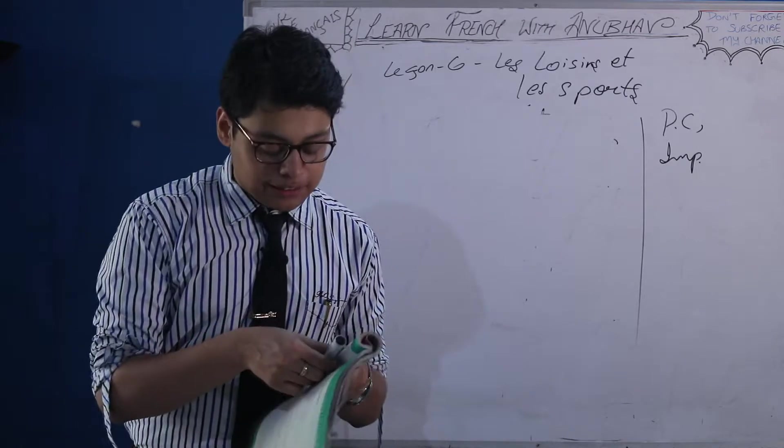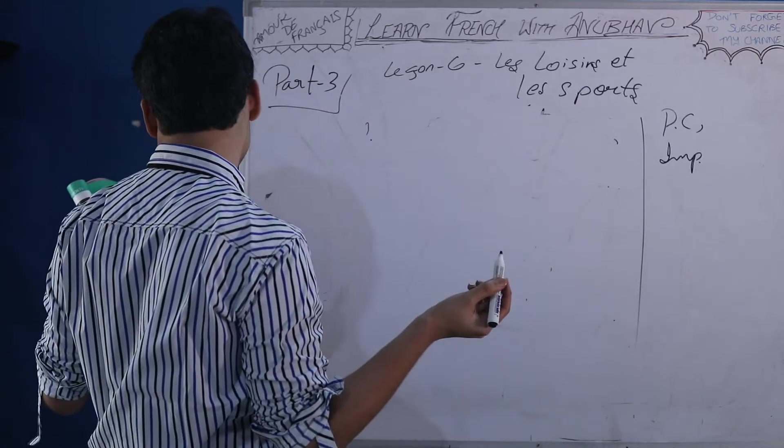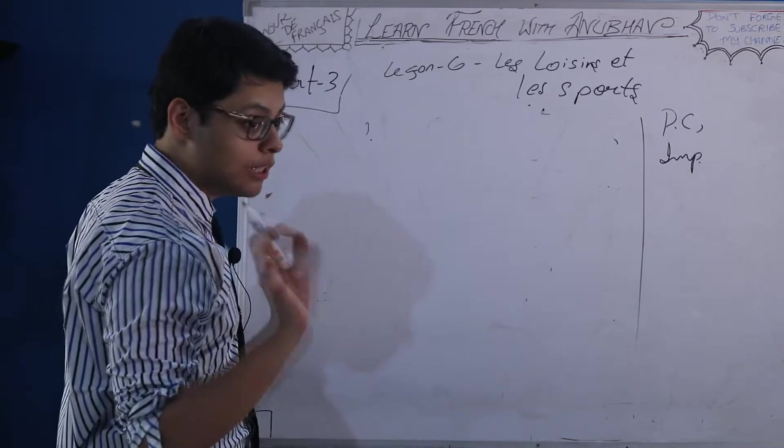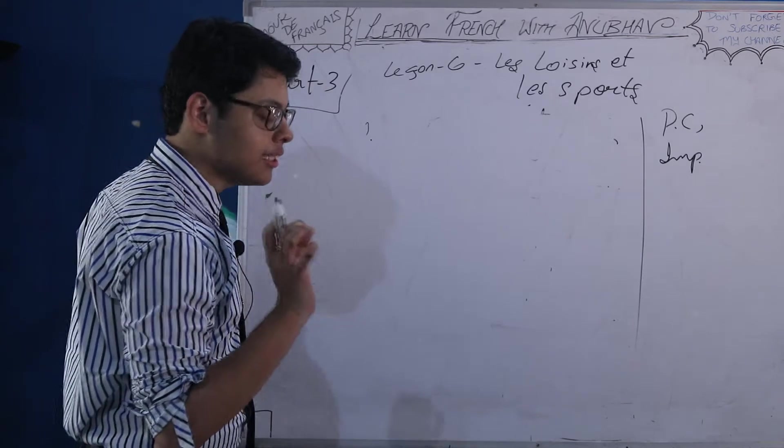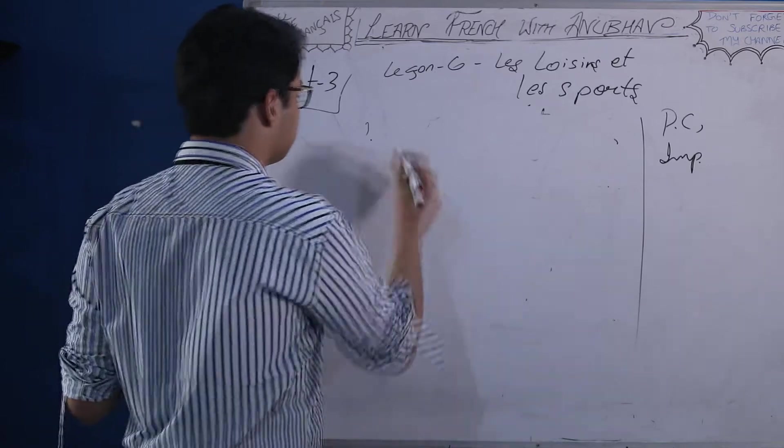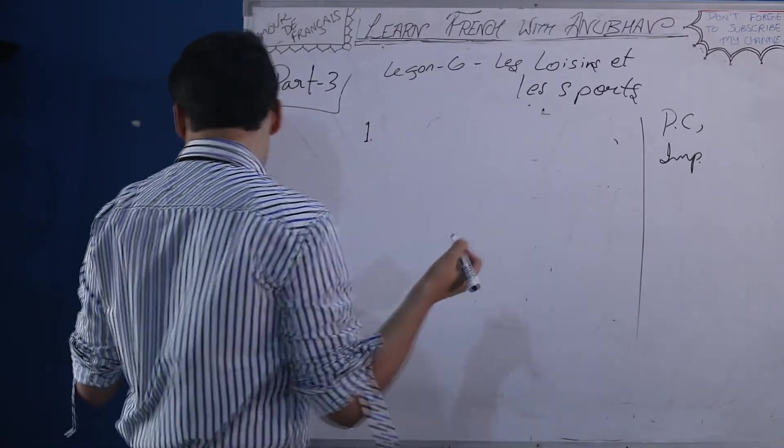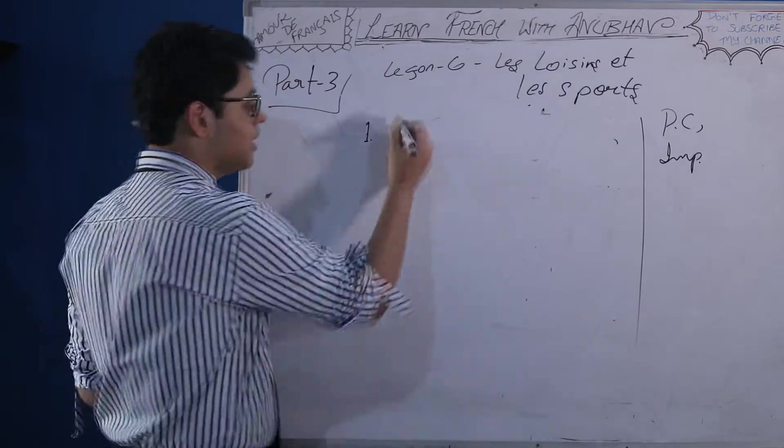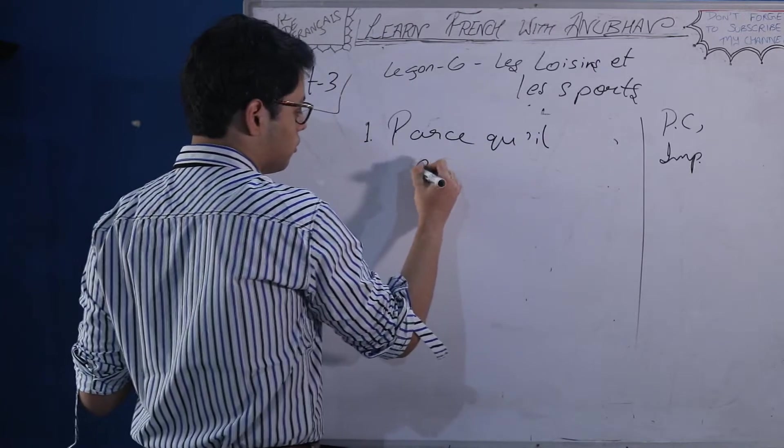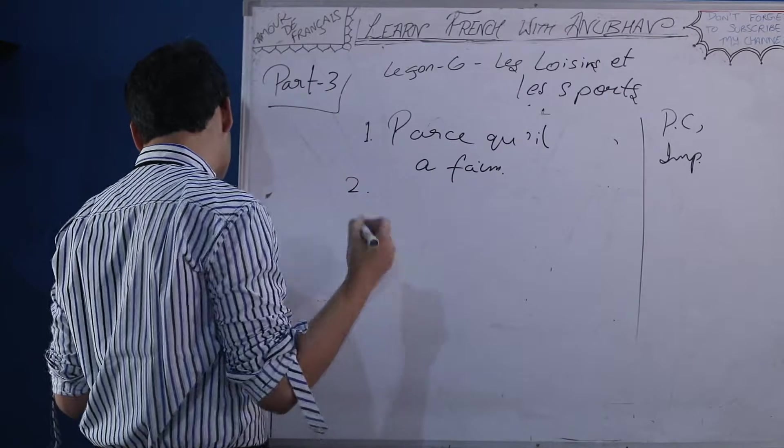It's a comprehension passage, so we will be answering the questions also. Pourquoi Paul est allé à la boulangerie? Why did Paul go to the boulangerie? I'm not writing complete sentences. I'm writing answers in crisp, but when you get an exam, when you have to write in your book, you have to write the full thing. So, Paul est allé à la boulangerie, paas ke la ferme. It's clearly mentioned in the passage, that he was hungry.